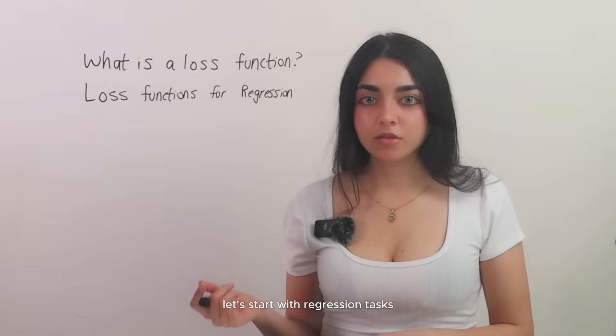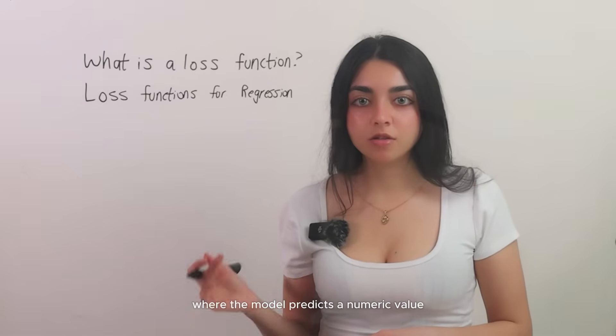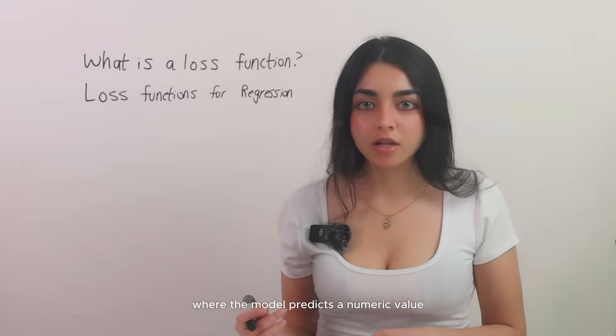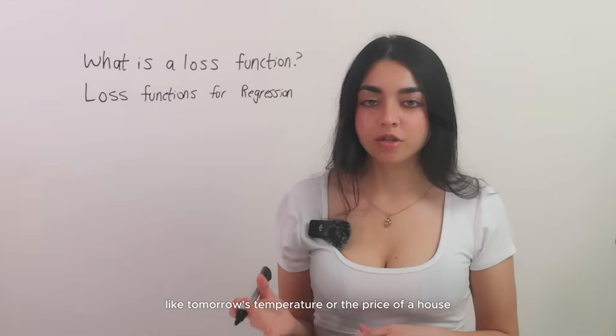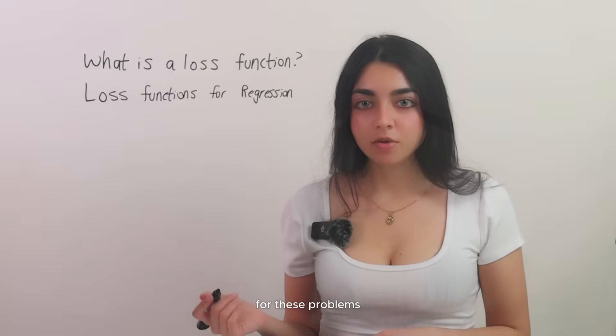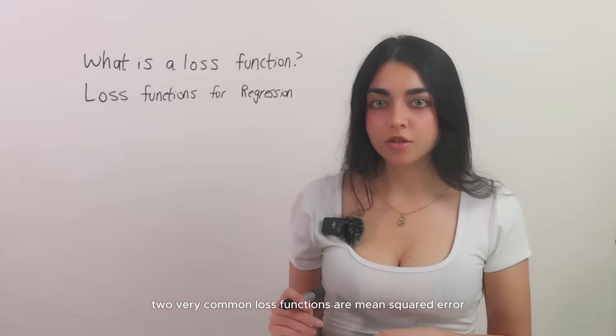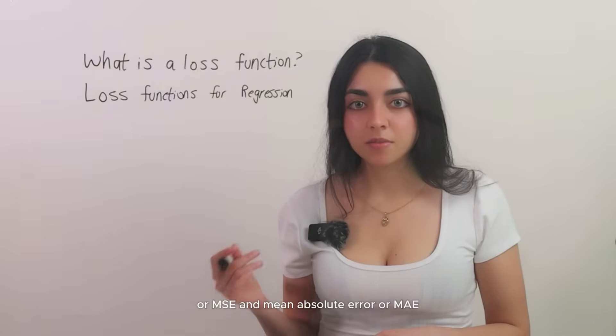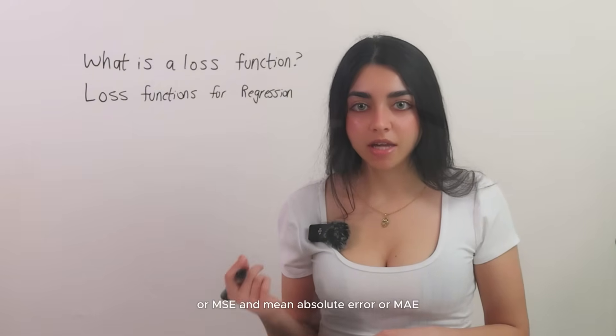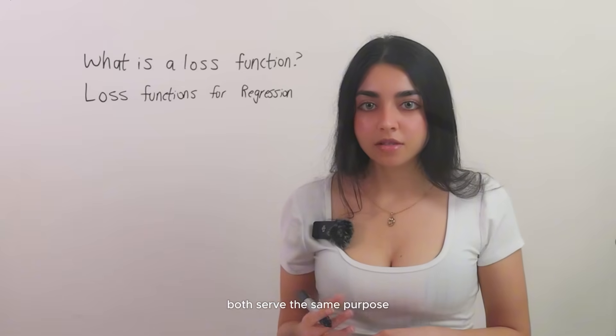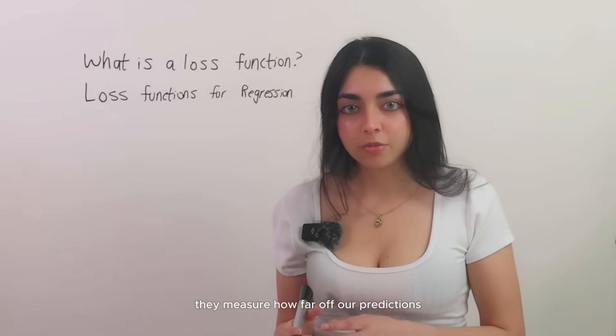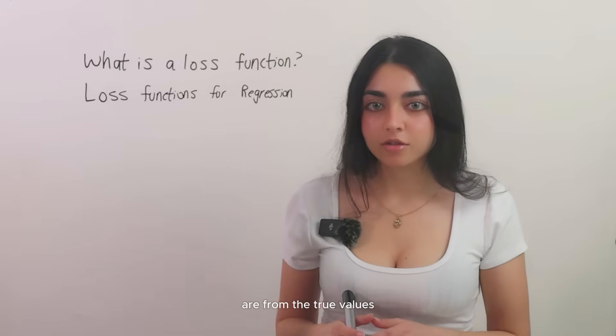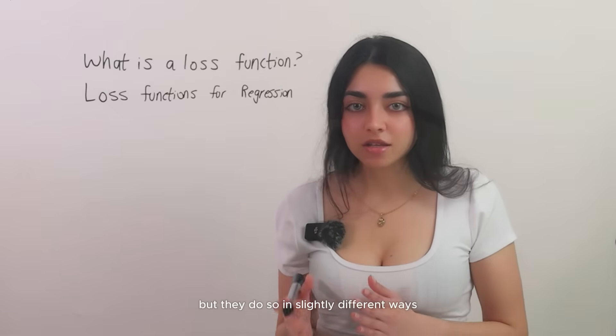Let's start with regression tasks, where the model predicts a numeric value, like tomorrow's temperature or the price of a house. For these problems, two very common loss functions are mean squared error, or MSE, and mean absolute error, or MAE. Both serve the same purpose. They measure how far off our predictions are from the true values, but they do so in slightly different ways.